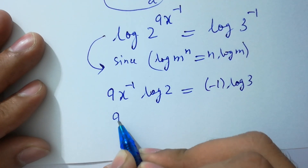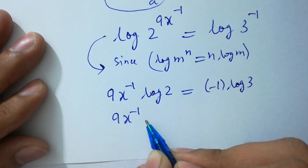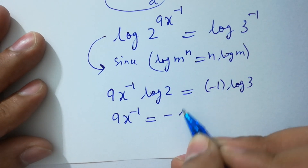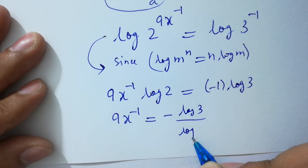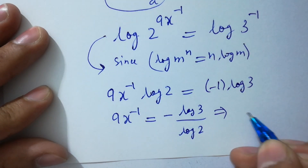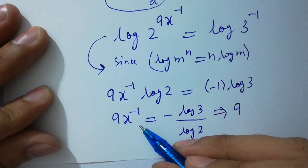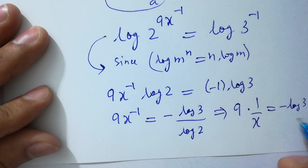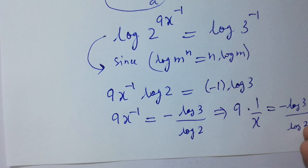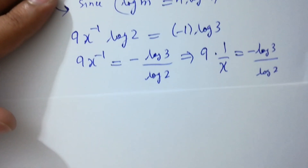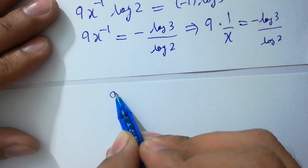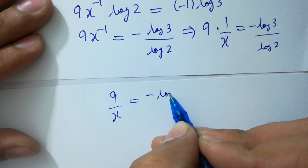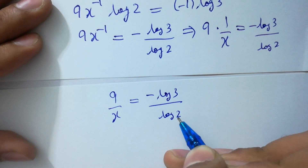We get 9x inverse equals minus log 3 over log 2. In the next step, 9x inverse can be written as 1 over x, so we have 9 over x equals minus log 3 over log 2.